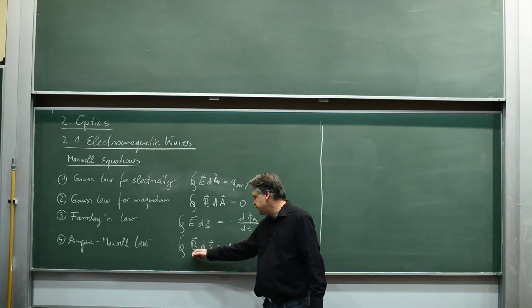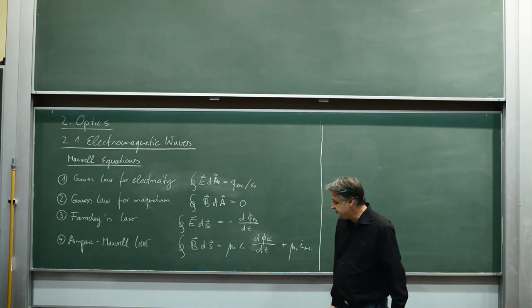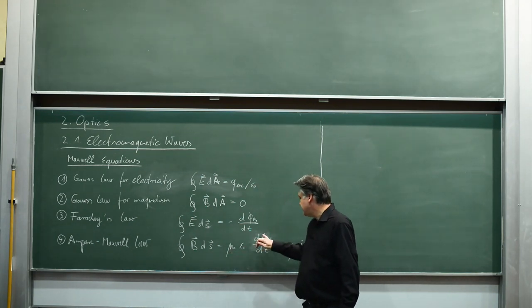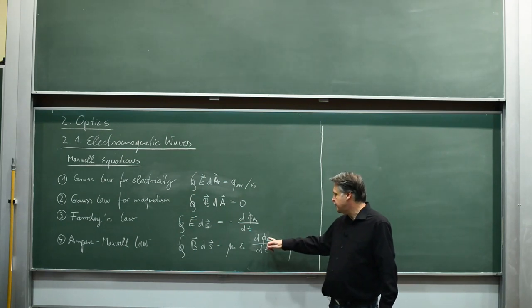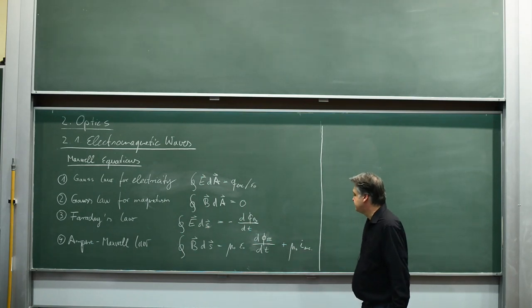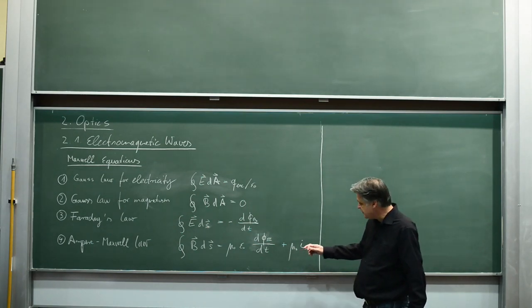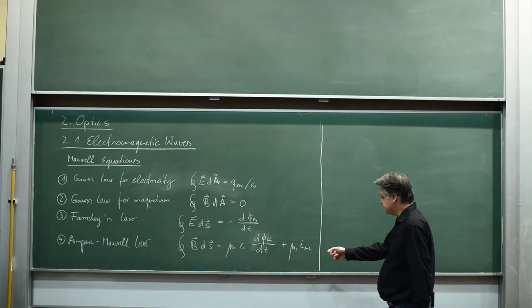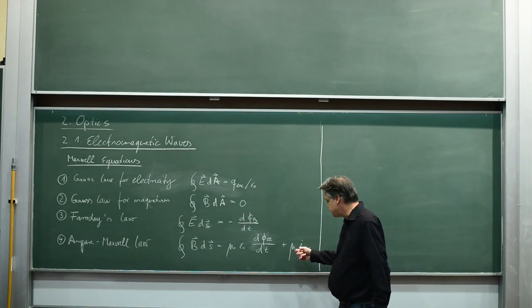Ampere-Maxwell law: integral B dS, again a line integral around the closed surface, is epsilon naught mu naught and the time derivative of the electric field flux lines d phi E by dT. In case you have a current, you have to add that additional term.